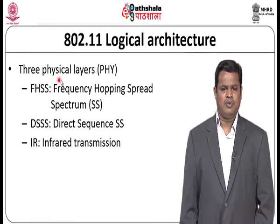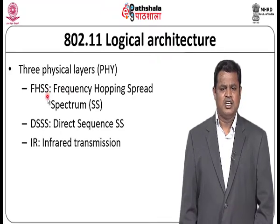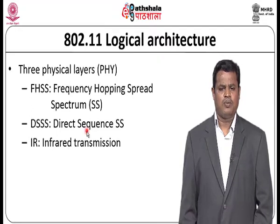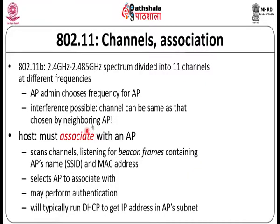MAC media access control takes care of providing authentication and privacy. To understand that, we need to know about the frame structure and how it provides control information related to communication between devices in the wireless medium. The physical layer has three types: FHSS (frequency hopping spread spectrum), DSSS (direct sequence spread spectrum), and IR (infrared transmission). For 802.11 channels and association: an attacker will try to identify what channel is used for transmitting data and will consider how a host is associated with an access point. These are the two places where attackers try to take control over the infrastructure or device.